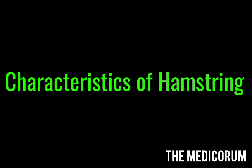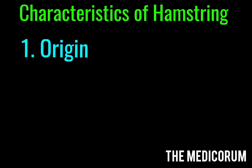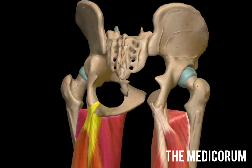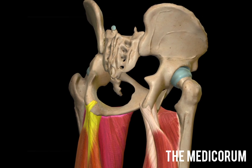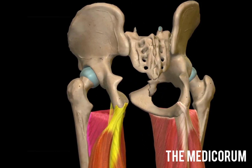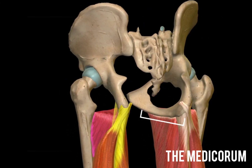Coming on to the characteristics — what are the unique features of all these muscles that place them in the hamstring group? They have four characteristics, and there are four muscles too, so you can remember everything by the number four. The first characteristic is origin: all the muscles originate from the ischial tuberosity, as you can spot in this figure.